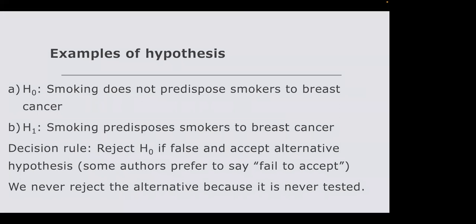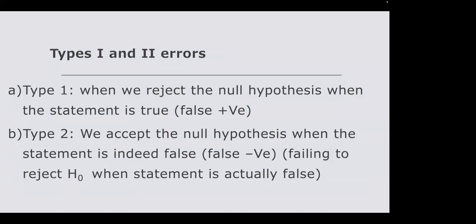The decision rule is: reject H₀ if it is shown to be false. If your results prove that smoking does cause cancer, then the null hypothesis — which states it does not — is false, so you reject it and accept the alternative hypothesis. Some authors prefer to say 'fail to accept' rather than reject. We never reject the alternative hypothesis because we never tested it.